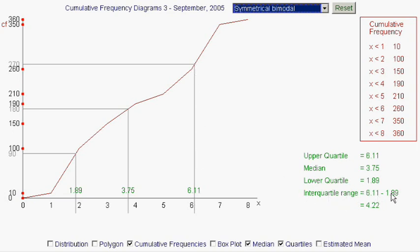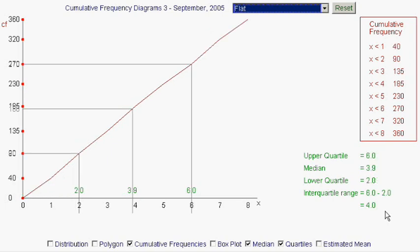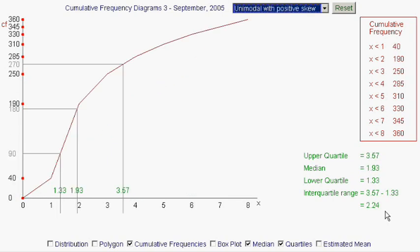Once again, the interquartile range is the difference between the two. In this case, it's rather larger than the last time, 4.22. And with different distributions, we'll get different values, but they're all calculated in the same way. The 180 mark is the halfway mark for the median. The 90 mark is the 1 quarter way point on the vertical axis, and that gives us the lower quartile. The 270 is the 3 quarters way value, and that gives us the upper quartile.